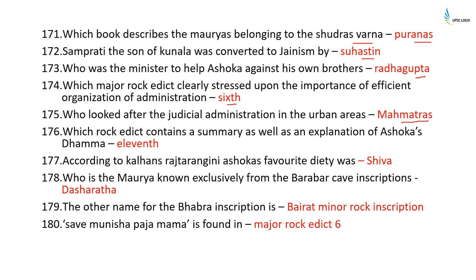Rock Edict 11 contains a summary as well as an explanation of Ashoka's Dhamma. According to Kalhana's Rajatarangini, Ashoka's favorite deity was Shiva. The Mauryan ruler known exclusively from the Barabar cave inscriptions is Dasharatha. The other name of the Bhabra inscription is the Bairath Minor Rock Inscription. 'Seva Munisha Pajamama' is found in Major Rock Edict 6.